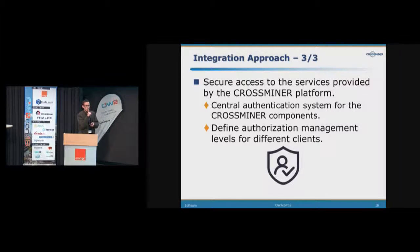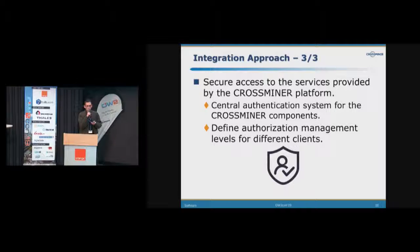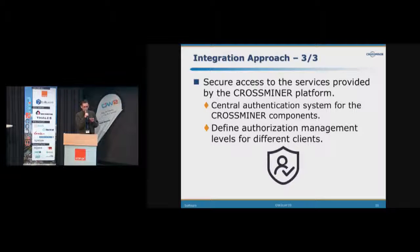The third step is to address all the security aspects of the different services provided by the platform, using another component from the microservice ecosystem — an authentication system. It's an underlayer of the API gateway which provides authorization and management levels for the different publicly exposed APIs. We implemented this using a JWT token mechanism for authentication, and for the API gateway we used the Netflix Zuul proxy for routing.